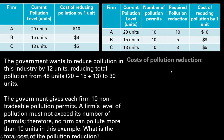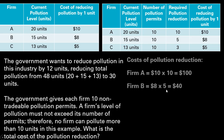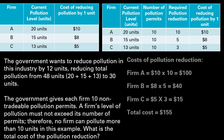The cost of pollution reduction for firm A is $10 times the required reduction of 10 units, so firm A will spend $100 reducing pollution. Firm B has to reduce pollution by 5 units at $8 a unit, so it will cost firm B $40. For firm C, $5 a unit times 3 units is $15 in total cost for pollution reduction. The total cost then — $100 plus $40 plus $15 — is $155.